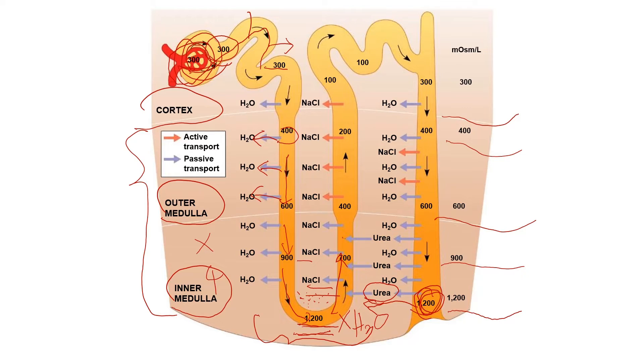Next, what prevents the capillaries of the vasa recta from dissipating the gradient by carrying away the high concentration of sodium chloride in the medulla interstitial fluid? The descending and ascending vessels of the vasa recta carry blood in opposite directions through the kidney osmolarity gradient. As the descending vessel conveys the blood toward the inner medulla, water is lost from the blood and sodium chloride is gained by diffusion.